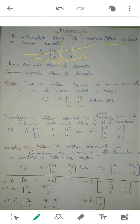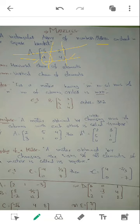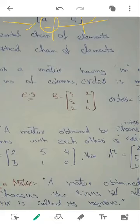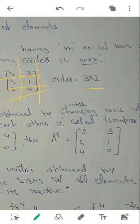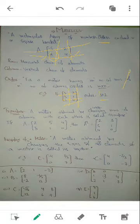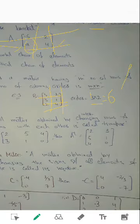Now the very important concept: order. For a matrix having m number of rows and n number of columns, the order is m cross n. For example, matrix B — dividing left to right gives three rows, and there are two columns. So the order is 3×2. Rows are always written first. 3 multiplied by 2 gives 6, so this matrix has six elements.